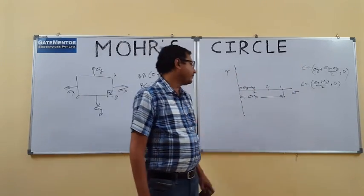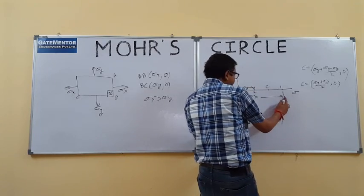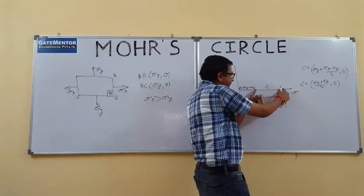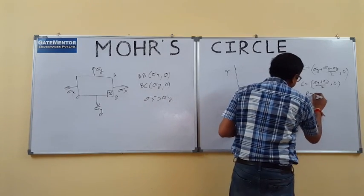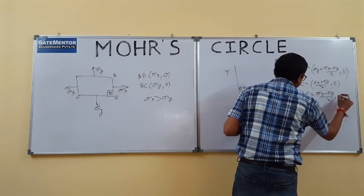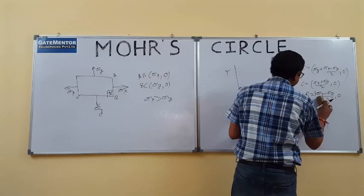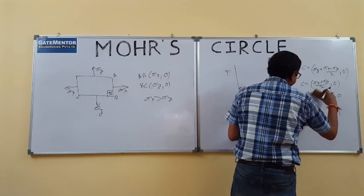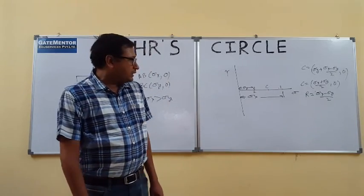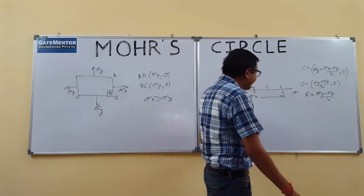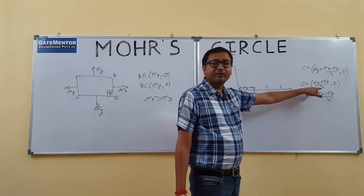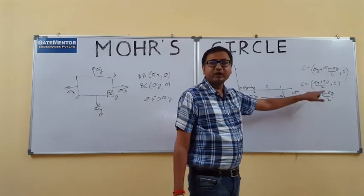Now we know that the diameter of the Mohr's circle spans from sigma y to sigma x, so the diameter is (sigma x minus sigma y). Therefore, the radius of the Mohr's circle is (sigma x minus sigma y)/2. So the center is (sigma x + sigma y)/2 and the radius is (sigma x minus sigma y)/2.